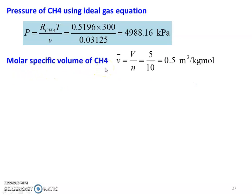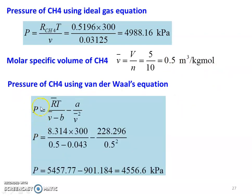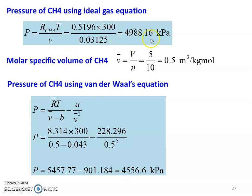Molar specific volume of methane: v-bar = V / N = 5 / 10 = 0.5 m³ per kilogram-mole. Pressure of methane using the Van der Waals equation: P = R-bar·T / (v-bar − B) − A / v-bar². Substituting: 8.314 × 300 / (0.5 − 0.043) − 228.296 / 0.5². First term: 5457.77, second term: 901.184. Van der Waals pressure = 4556.6 kPa. Ideal gas: 4988.1 kPa; Van der Waals: 4556.6 kPa.